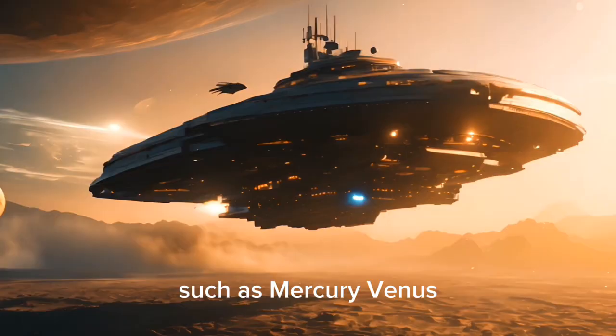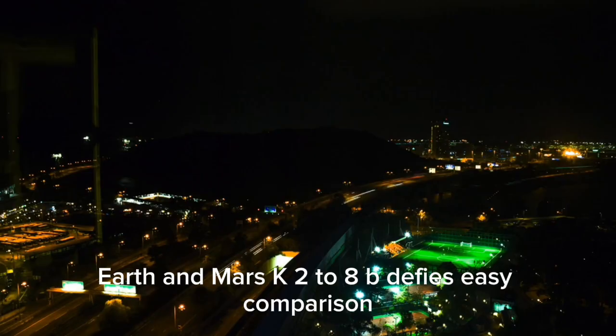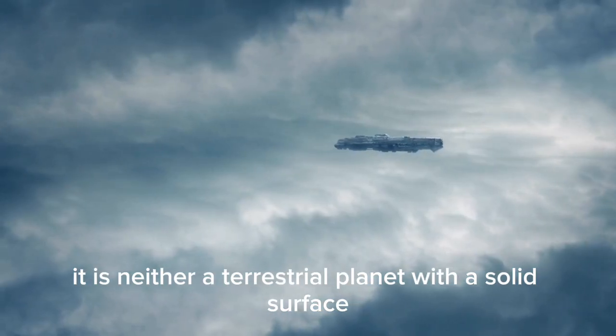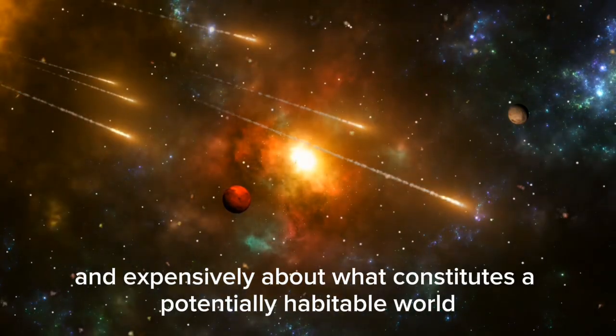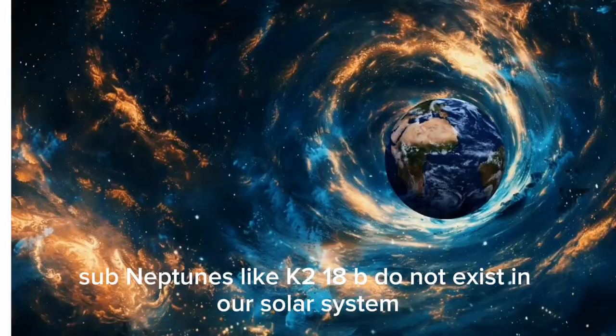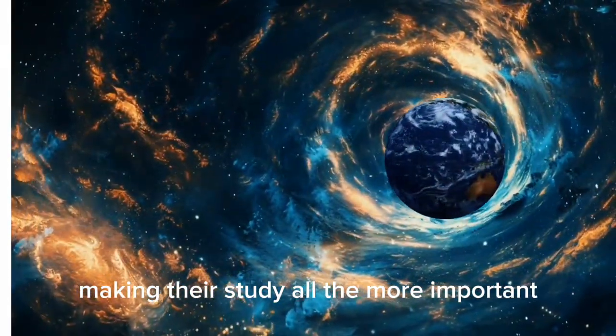Unlike the familiar rocky planets of our solar system such as Mercury, Venus, Earth, and Mars, K2-18b defies easy comparison. It is neither a terrestrial planet with a solid surface nor a traditional gas giant. Instead, its unique characteristics have forced astronomers to think more creatively and expansively about what constitutes a potentially habitable world. Sub-Neptunes like K2-18b do not exist in our solar system, making their study all the more important.